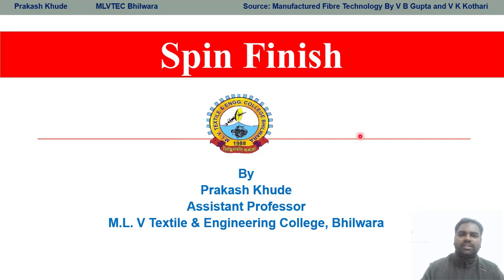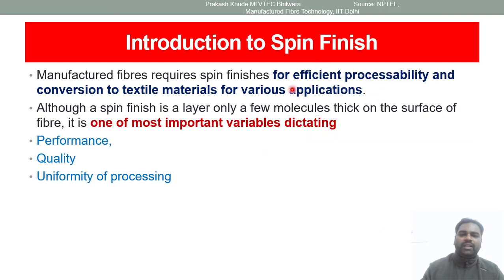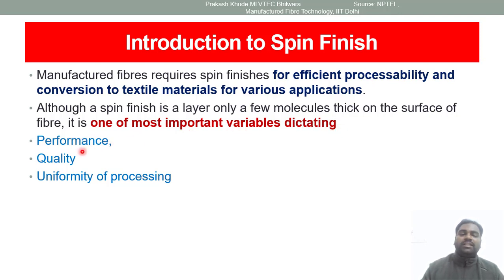So today in this lecture we will talk about the spin finish, and specifically we will discuss what is the main role of spin finish in the processing of your fiber. Manufactured fibers require spin finish for efficient processability and its conversion into textile material for various applications. Although spin finish is just a layer of only a few molecules on the surface of the fiber, it is one of the most important variables dictating the performance, quality, and uniformity of processing.